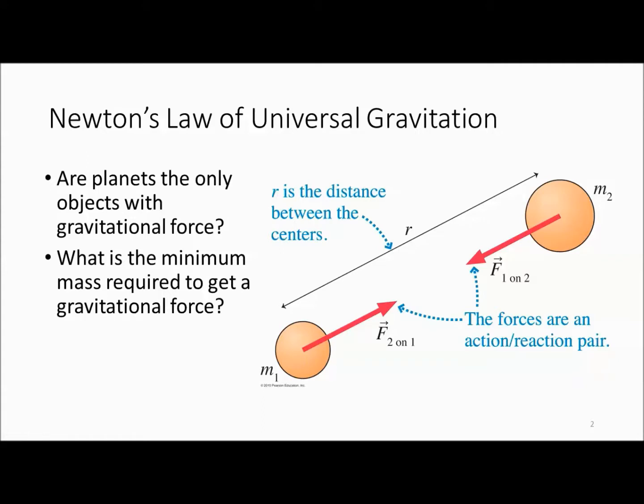These forces act as an action and reaction pair. So if I have mass 1 and I have mass 2, the force of 2 on 1, 1 is going to be pulled towards 2 and 2 is going to be pulled towards 1. They have an equal and opposite force. This is Newton's third law.